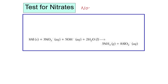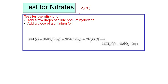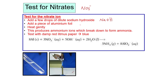The next anion is nitrate, NO3 1−. The test for nitrate involves adding a few drops of dilute sodium hydroxide (NaOH) with a piece of aluminum foil, and gently heating. Ammonium ions are produced, then ammonia gas (NH3) is produced. Since NH3 has alkaline properties, it turns the damp red litmus paper blue.